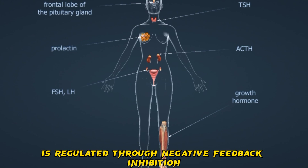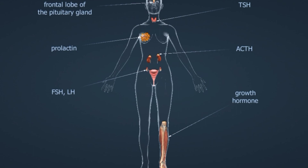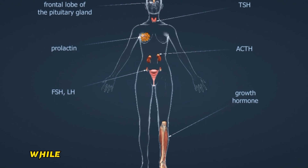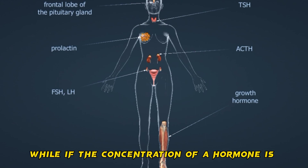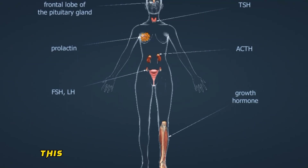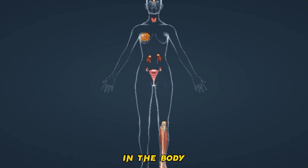The hormone secretion of the hypothalamus and the pituitary gland is regulated through negative feedback inhibition by the hormones secreted by other endocrine glands. Negative feedback inhibition prevents the hyperproduction of hormones, while if the concentration of a hormone is low, it stimulates production. This allows the fine-tuning of hormone concentrations in the body.